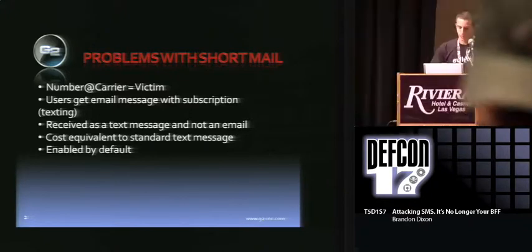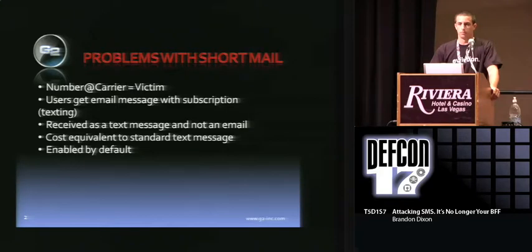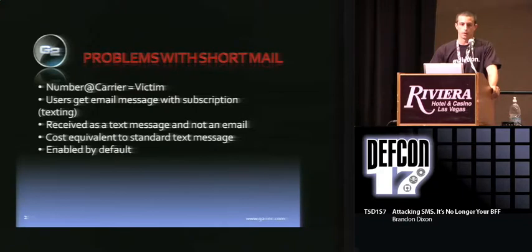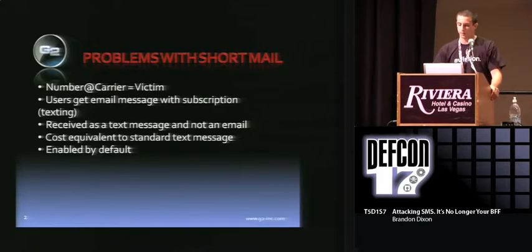Starting with short mail: the second you have an account or some service with your mobile provider, your number is automatically associated with an email address. This email address automatically turns you into a victim. All you have to have is text messaging enabled. When somebody has your number and the carrier you belong to, they can send a message to that address, and the message will make it there without a problem. It's received as a text message, not as an email, so it shows up in your inbox. Cost equivalent is that it's standard to a regular text message.